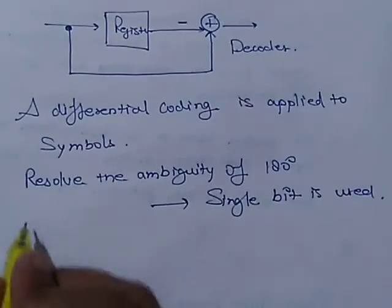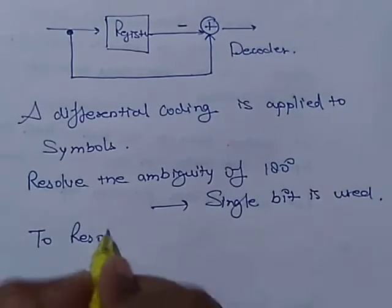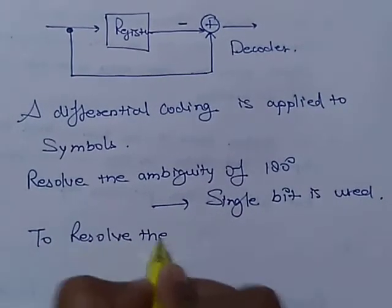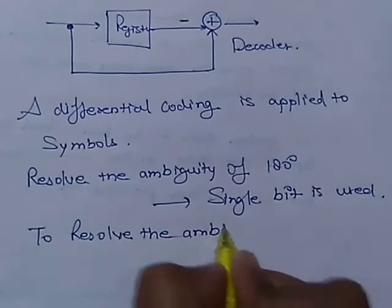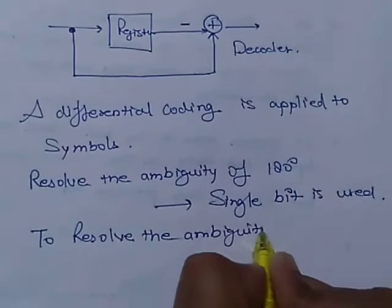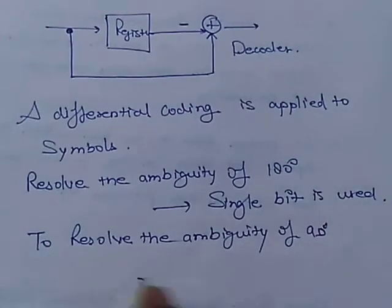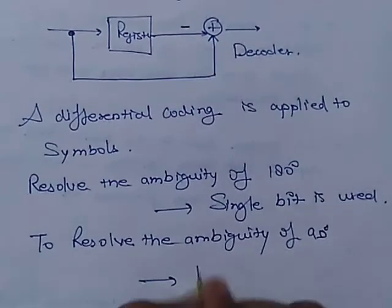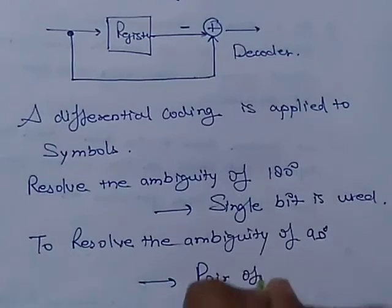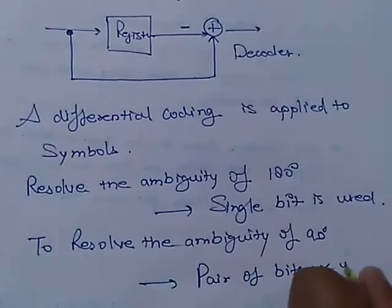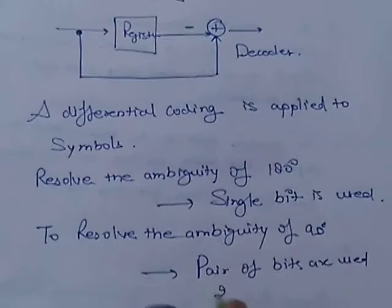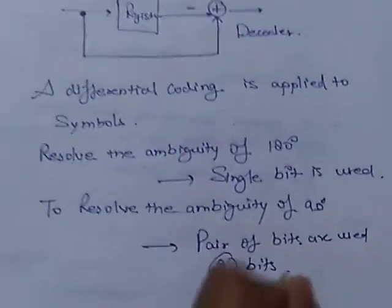To resolve the ambiguity of 90 degrees, pair of bits are used, that is two bits are used.